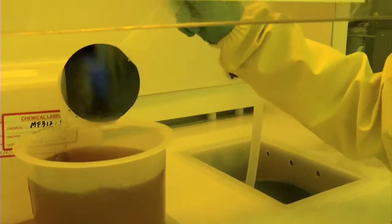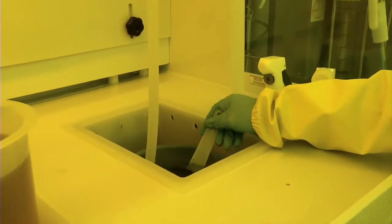Finally, the substrate is developed, rinsing away the exposed areas of the photoresist. The next step is to use this protective mask and etch to remove material from the exposed areas of the substrate.